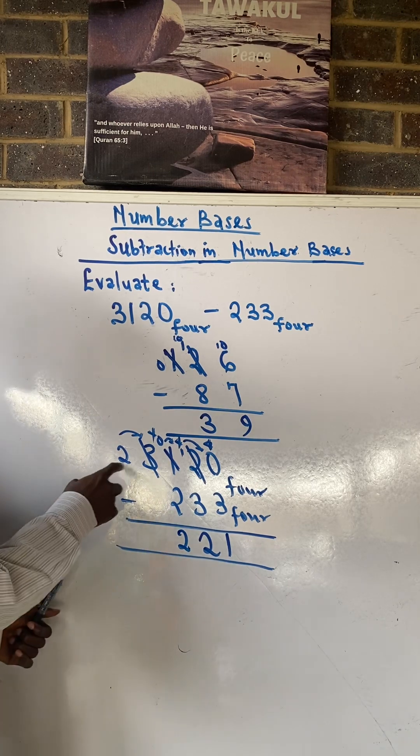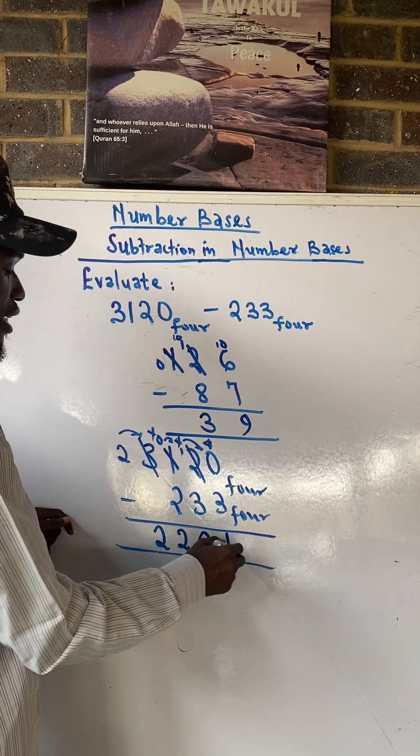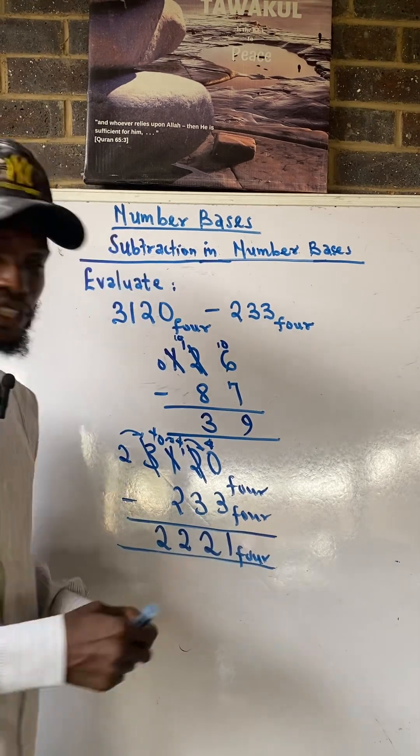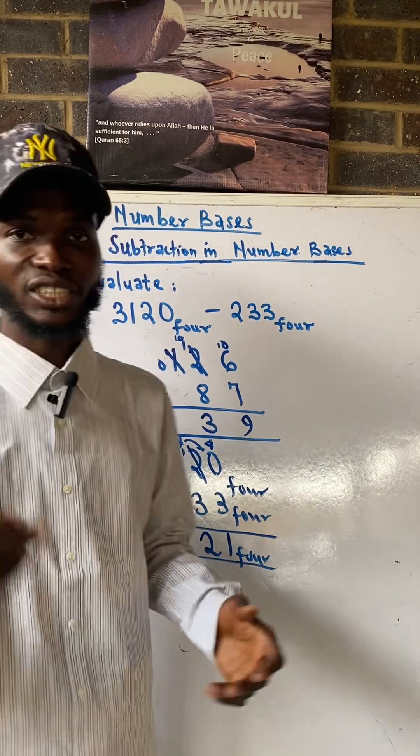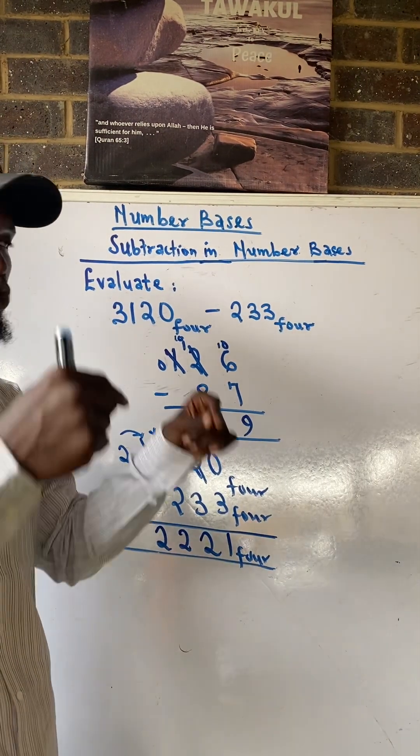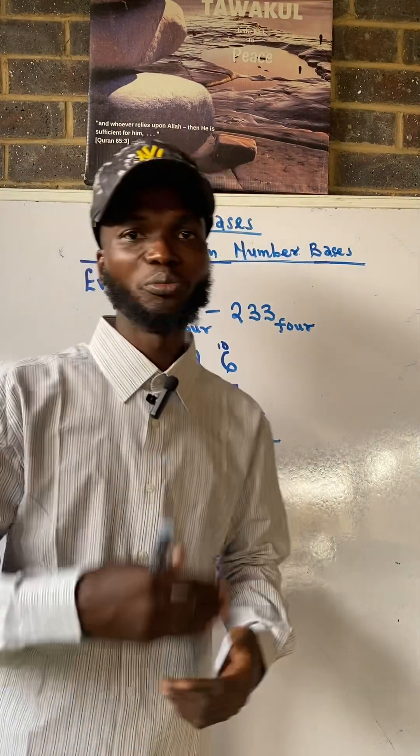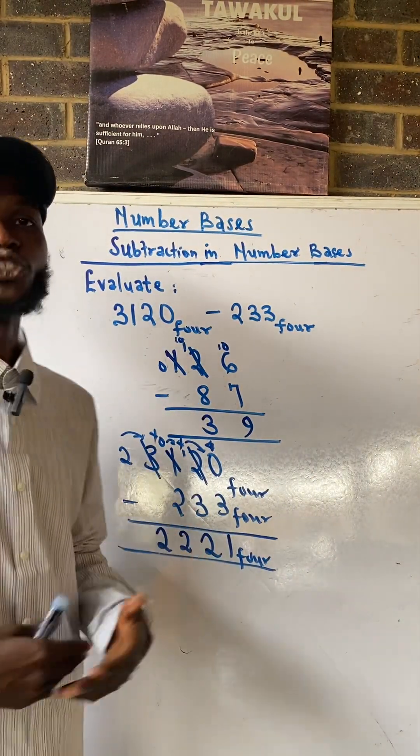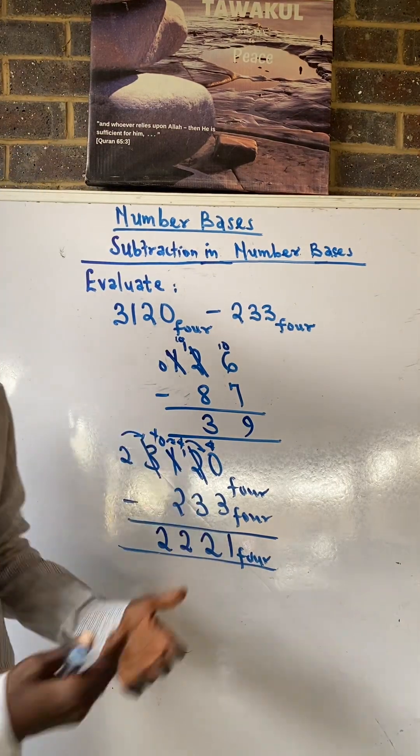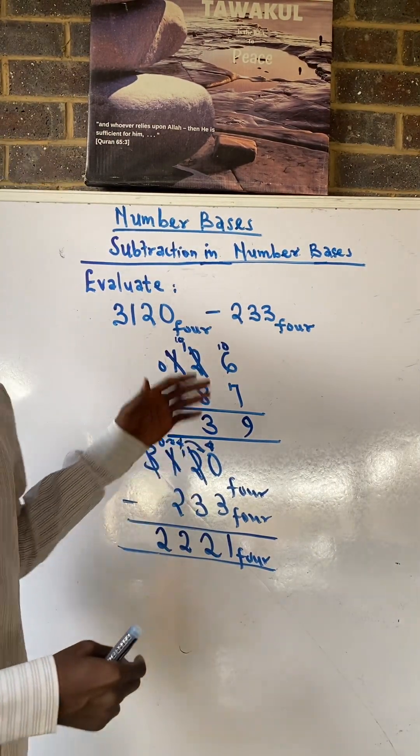So this is the end of the question. That means if you are given another question in other bases and you have a problem of borrowing, always borrow your base. If you are dealing in base 3 you borrow 3, if you are dealing in base 4 you borrow 4. That is how we apply that sense of primary school. Thank you for viewing this.